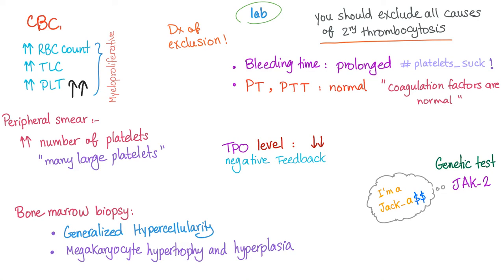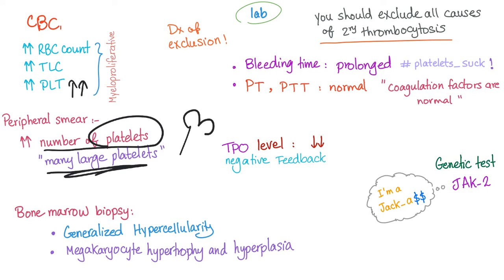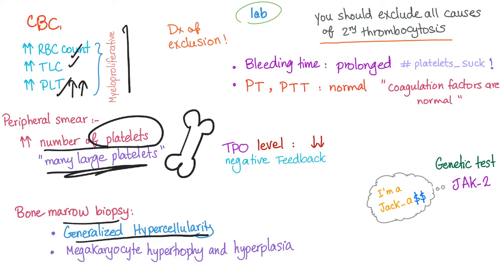On peripheral smear, you'll find lots of platelets and many large platelets — probably immature platelets or megakaryocyte fragments, because when the bone marrow is working excessively it starts releasing immature cells into the bloodstream. On bone marrow biopsy, you'll find generalized hypercellularity because it's a myeloproliferative disorder, along with megakaryocyte hypertrophy and hyperplasia.